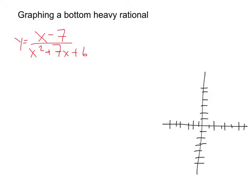Hey, so now when I graph a bottom-heavy rational expression, what I'm talking about here is that the powers on the bottom are heavier, so I have more powers. This is a second-degree polynomial, and this is a first-degree, so there are more powers on the bottom. It's heavier on the bottom.